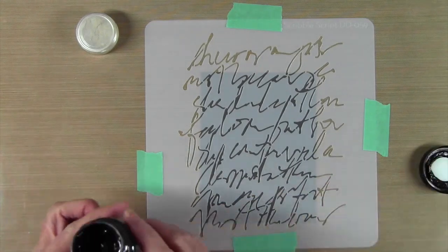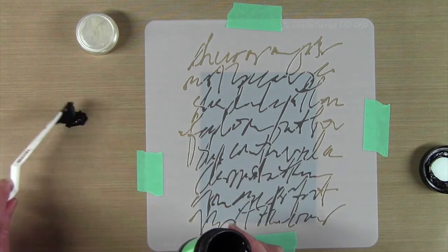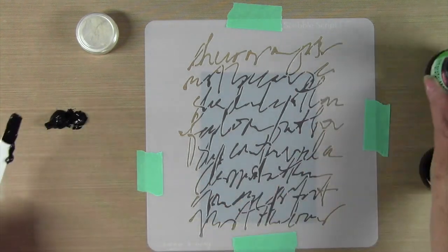To get this started, I'll just open the jar, and using my palette knife I'll scoop out an amount of paste that I think I'll need for the whole sheet here.